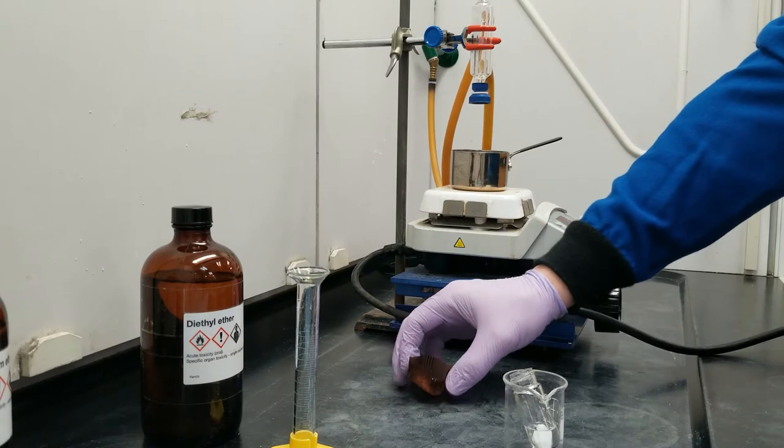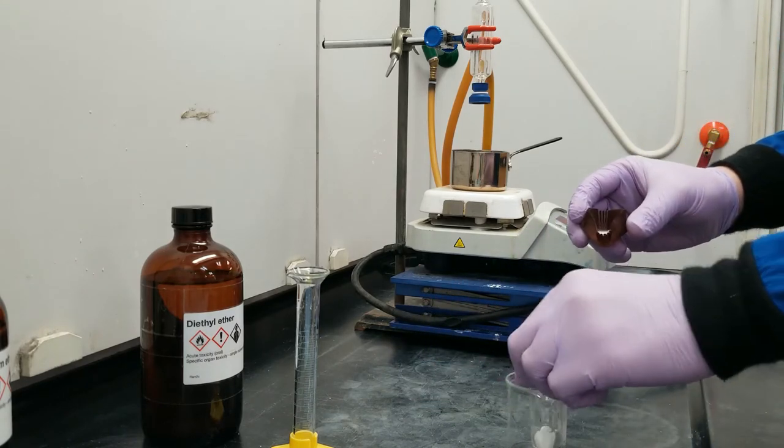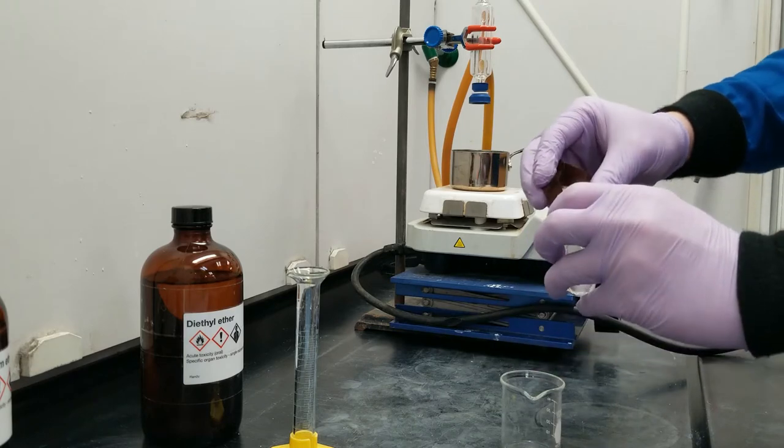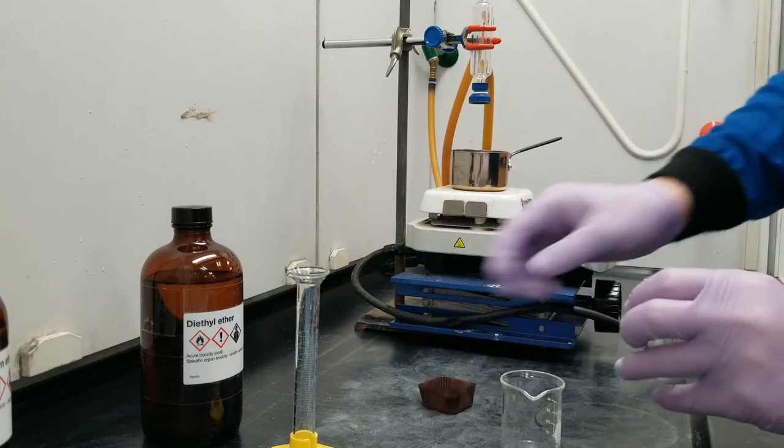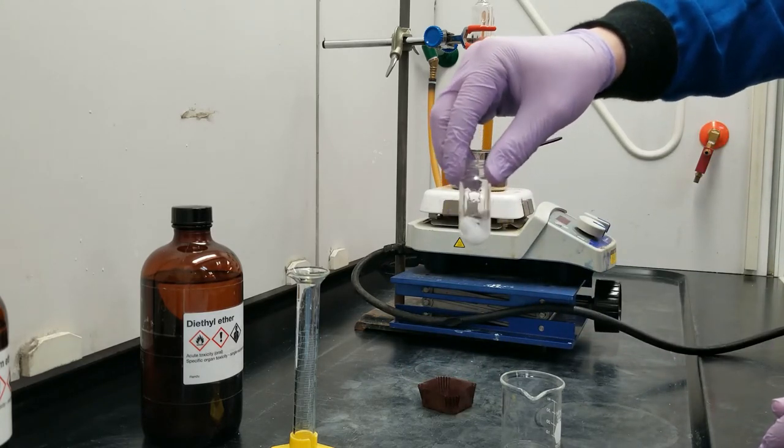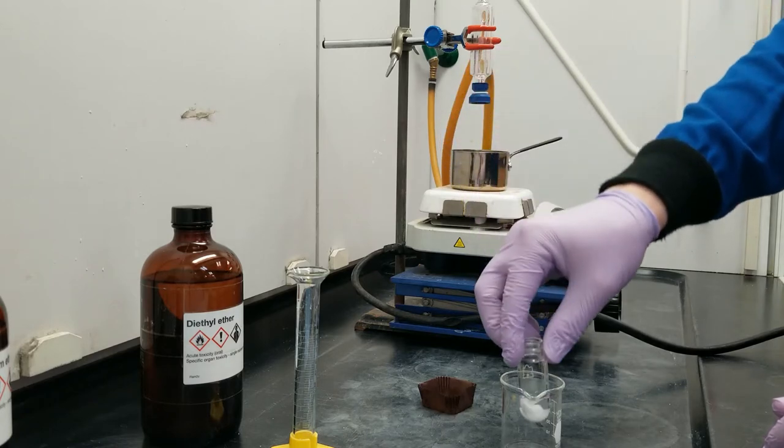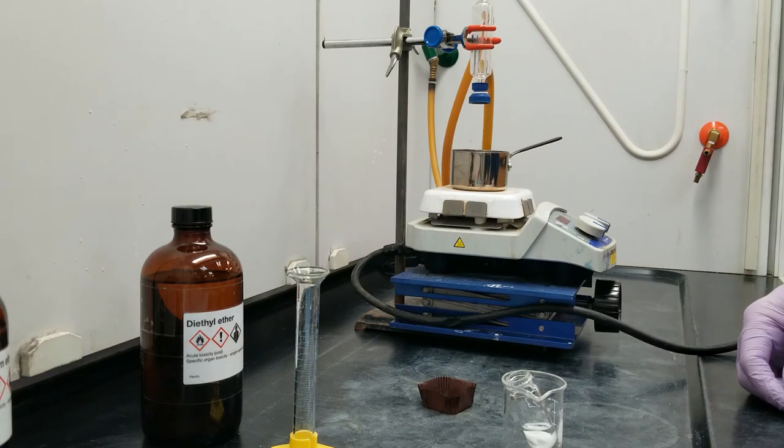Finally, I'm going to add the maleic anhydride. About 0.4 grams of it. It's not going to dissolve immediately, but what we're going to do in order to dissolve everything, as well as get the reaction going, is put it on heat.